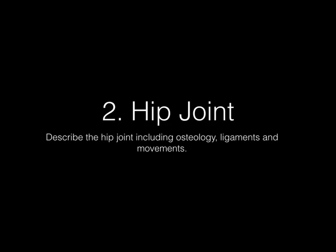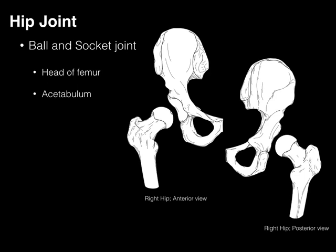Now the hip joint. We'll describe the hip joint including its osteology, ligaments, and its movements. It's a synovial ball and socket joint where the ball is formed by the head of the femur, which articulates with the socket — the acetabulum — and together they make this freely moving synovial joint. The acetabulum is quite deep and, in contrast to the glenoid cavity in the shoulder joint, provides far more stability, though it's just less flexible.